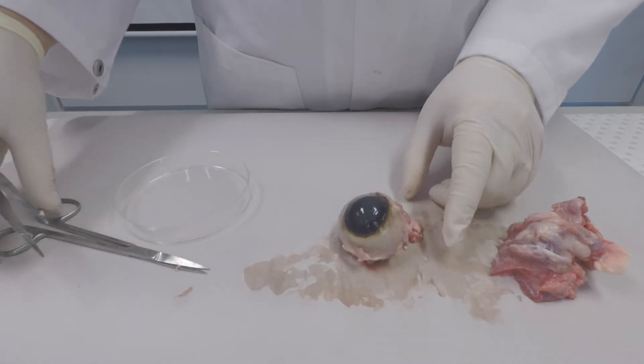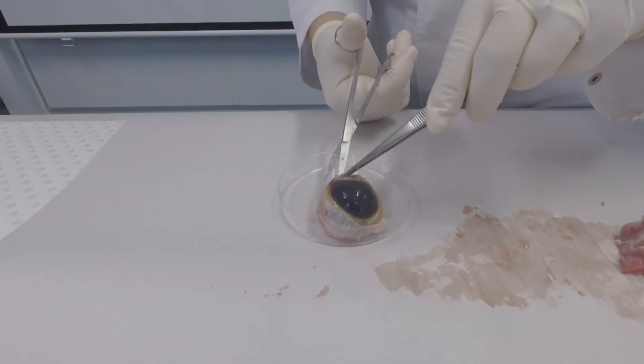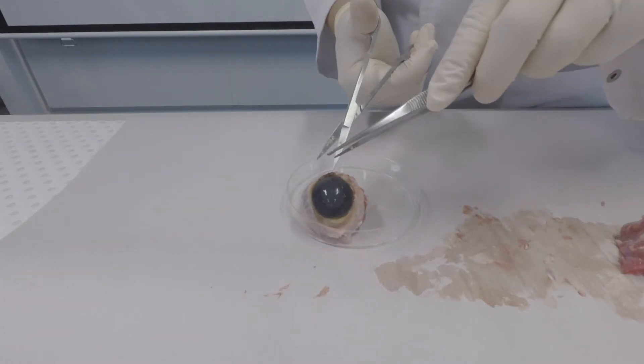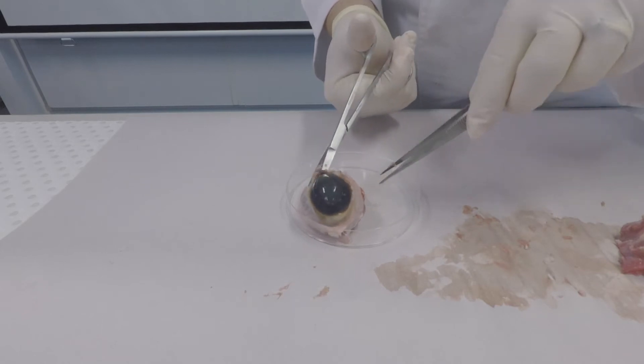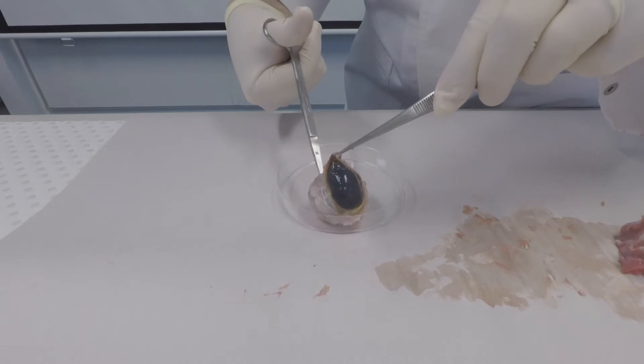This is the cornea at the front of the eye. Now we're going to dissect the eye. First of all, I'm going to cut around the cornea through the sclera, the sclera being the tough outer portion of the eyeball.